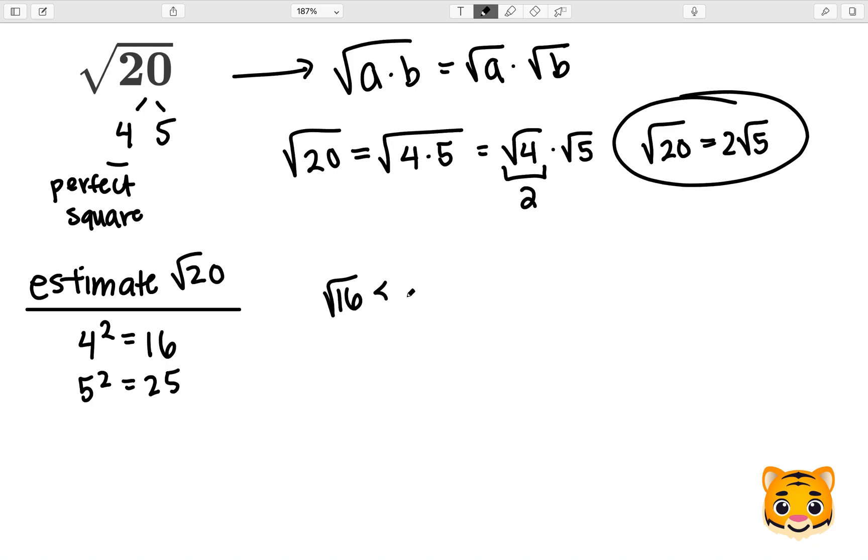So we can rewrite an inequality where the square root of 16 is less than the square root of 20, which is less than the square root of 25. Because 4 squared is 16, the square root of 16 is 4.